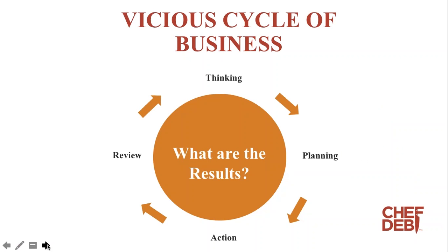The first thing we're starting with is something called the vicious cycle of business. So many times when you make a decision about your business, you go into a mode of thinking — a lot of chefs stay in what I like to call analysis paralysis. They don't ever seem to move forward past that. Every business began with a thought, but then you have to move from thinking to planning. Some chefs get stuck in the planning stage and there's no action. Some chefs and other business owners go straight from thinking to action, and then they wonder why things fail.